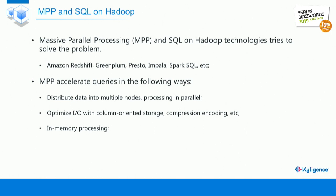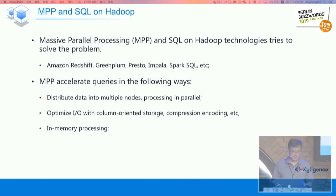While we were running benchmarks on big data we found that these MPP solutions couldn't work well, because these solutions are trying to accelerate queries with the following methodologies. One is the shared-nothing architecture: they will distribute the data into multiple nodes by certain keys, and then when you query the data they translate the SQL query to parallel processing to reduce the total latency.